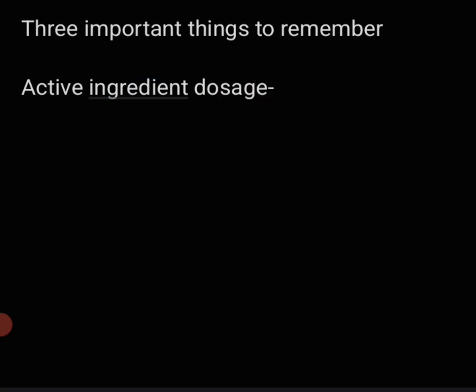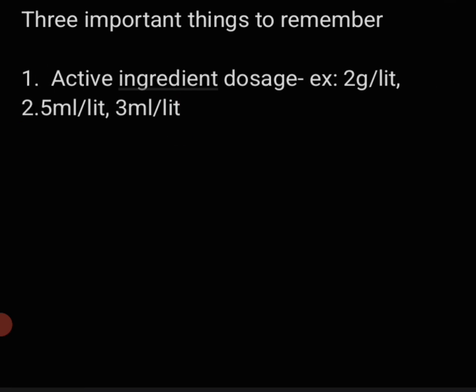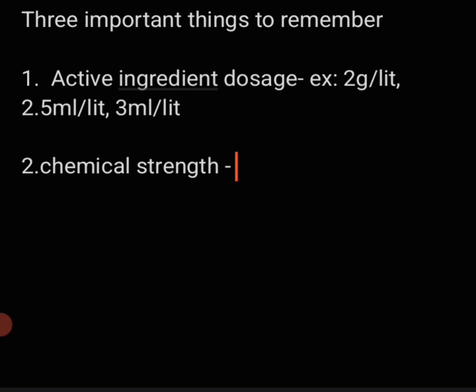The first thing is active ingredient dosage. Active ingredient dosage is the amount of toxin required to kill a particular pest. For example, while you are studying different insect pests, you will encounter in the management column that in order to kill this pest, you need to spray 1.5 ml per litre of acetate or 2 ml per litre of chloropyrifos. That is nothing but the active ingredient dosage — the amount of toxin required to kill the insect.